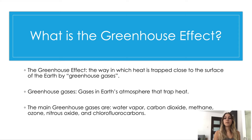Ozone, which is up in the atmosphere where planes fly — the ozone layer blocks the sun's radiation, which helps protect us from damaging rays. Nitrous oxide, which is a natural part of the nitrogen cycle. And chlorofluorocarbons, which are fluorinated gases that are not created in nature and they damage the protective ozone layer.